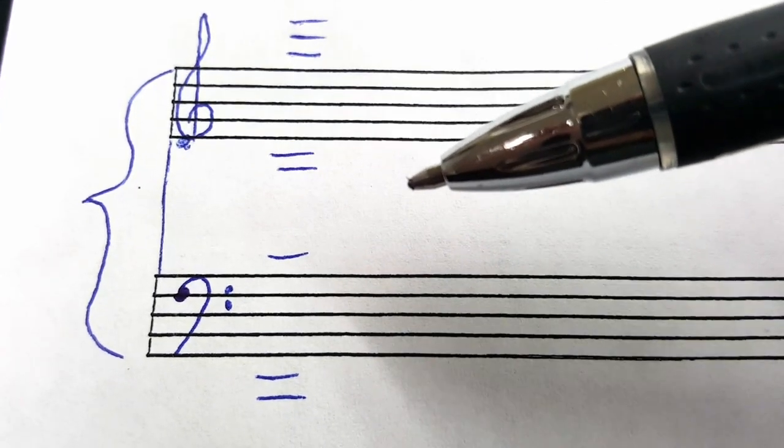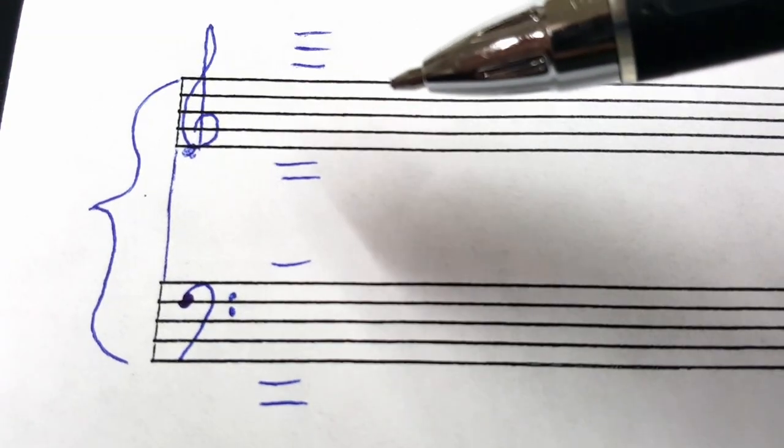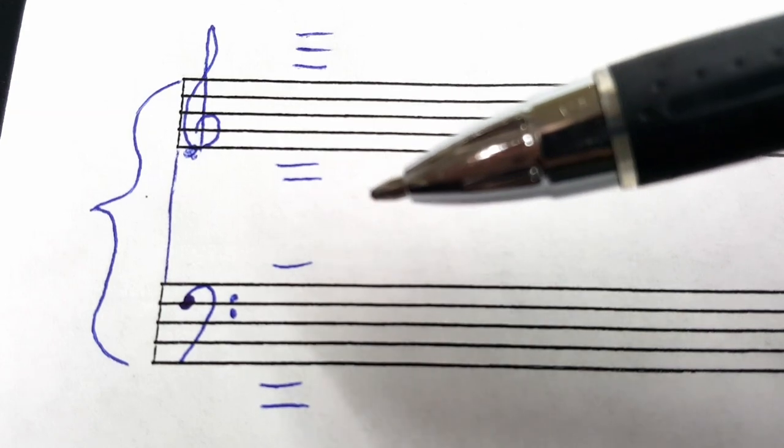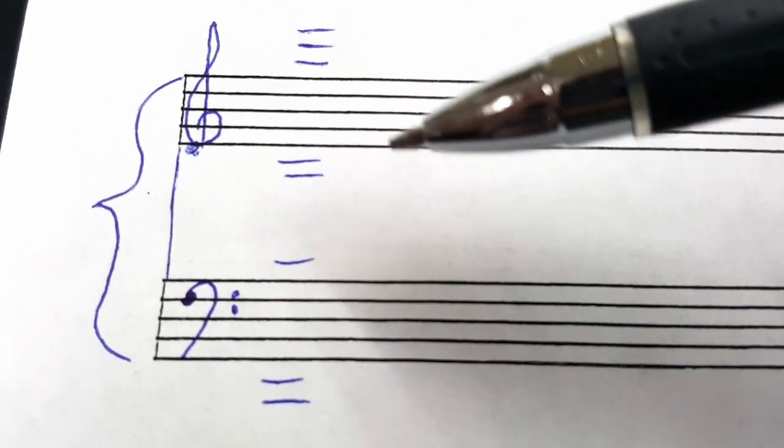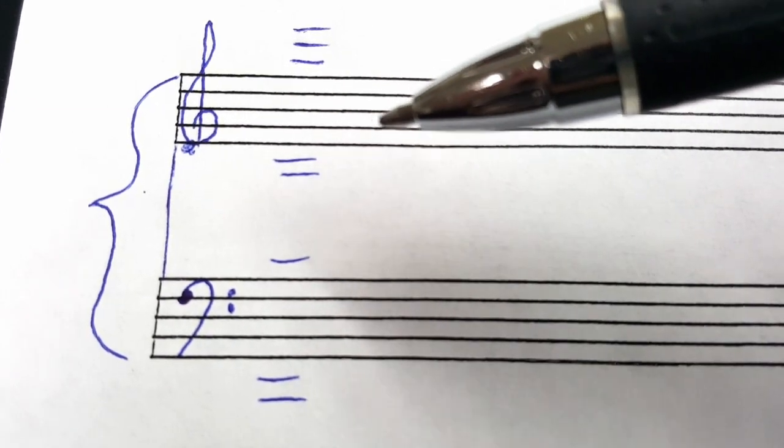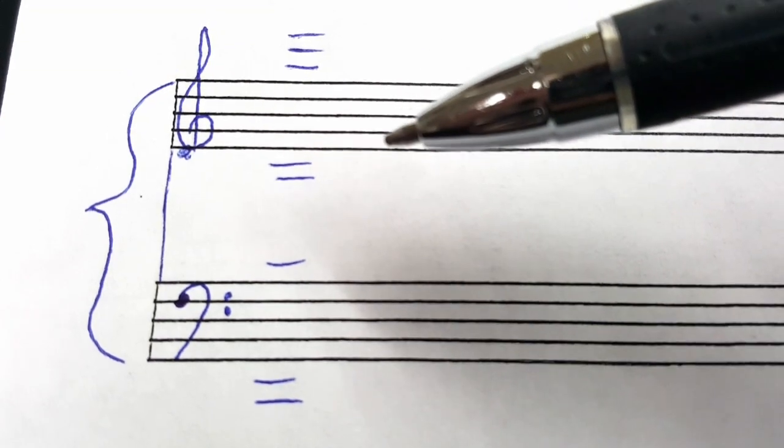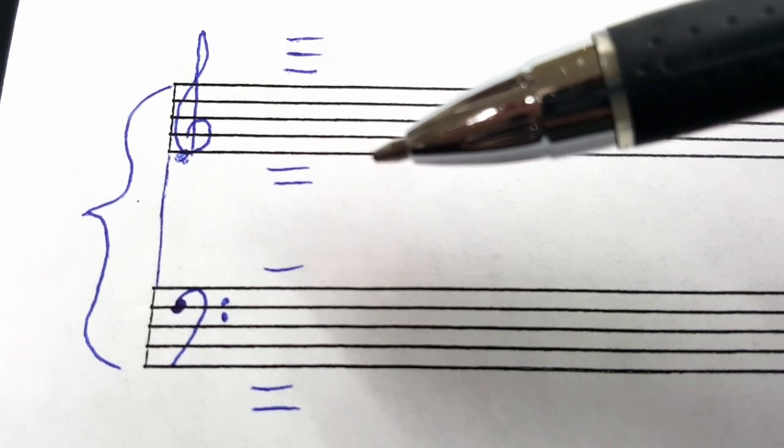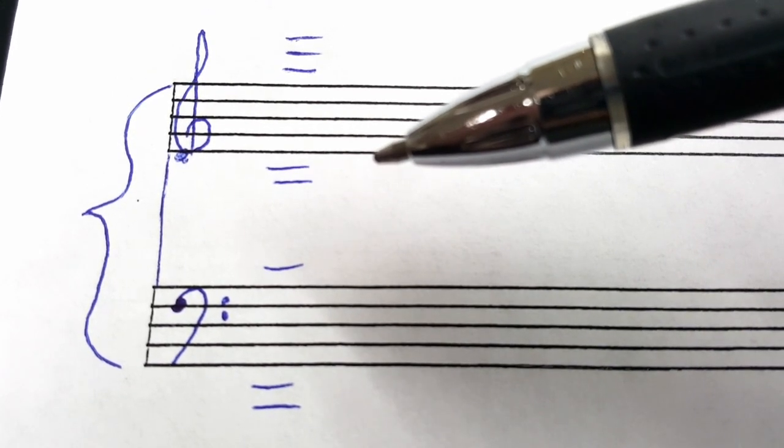Ledger lines are the lines that extend the staff either above or below the staff. This is not only for piano students, but there are many different instruments that utilize these ledger lines when they play their musical instrument.